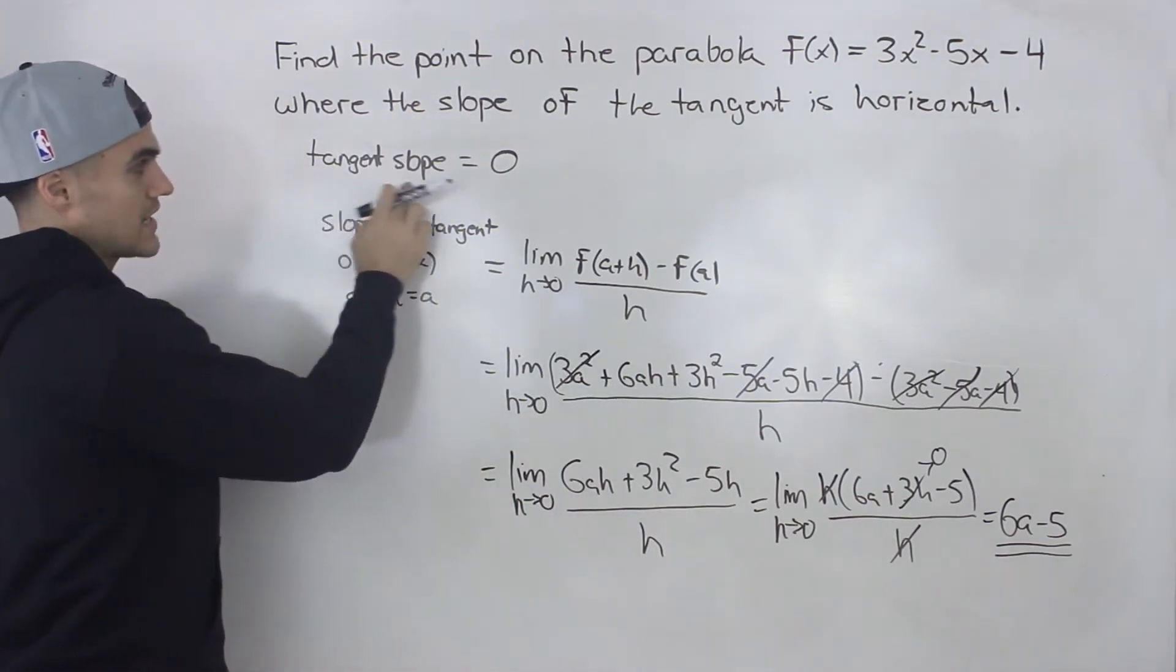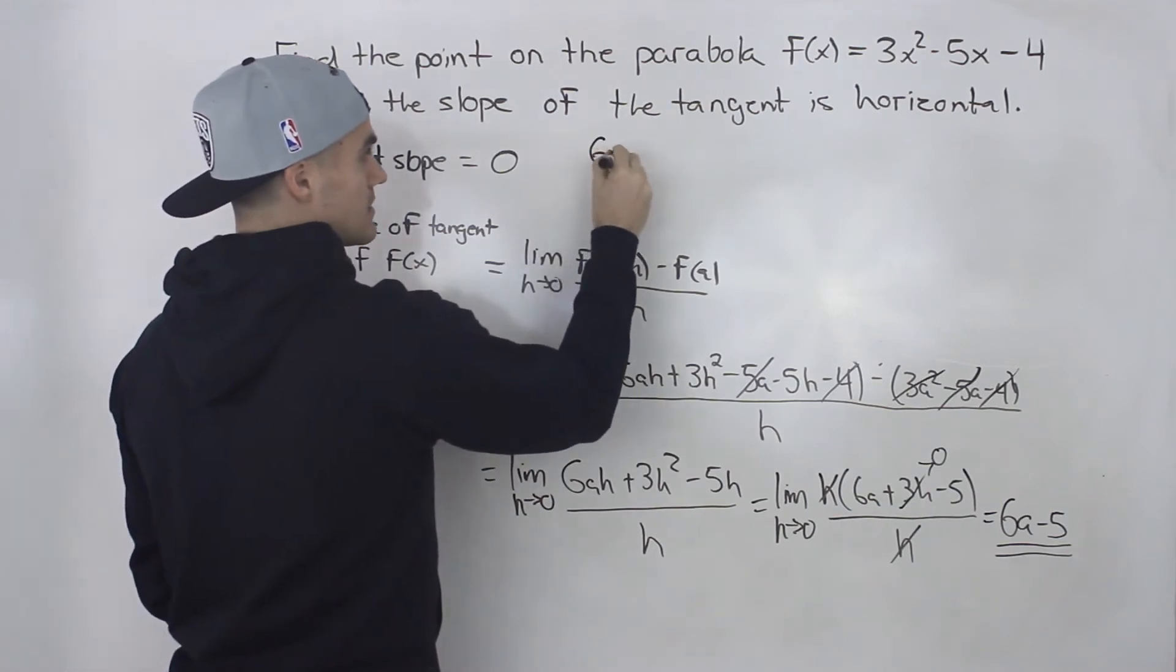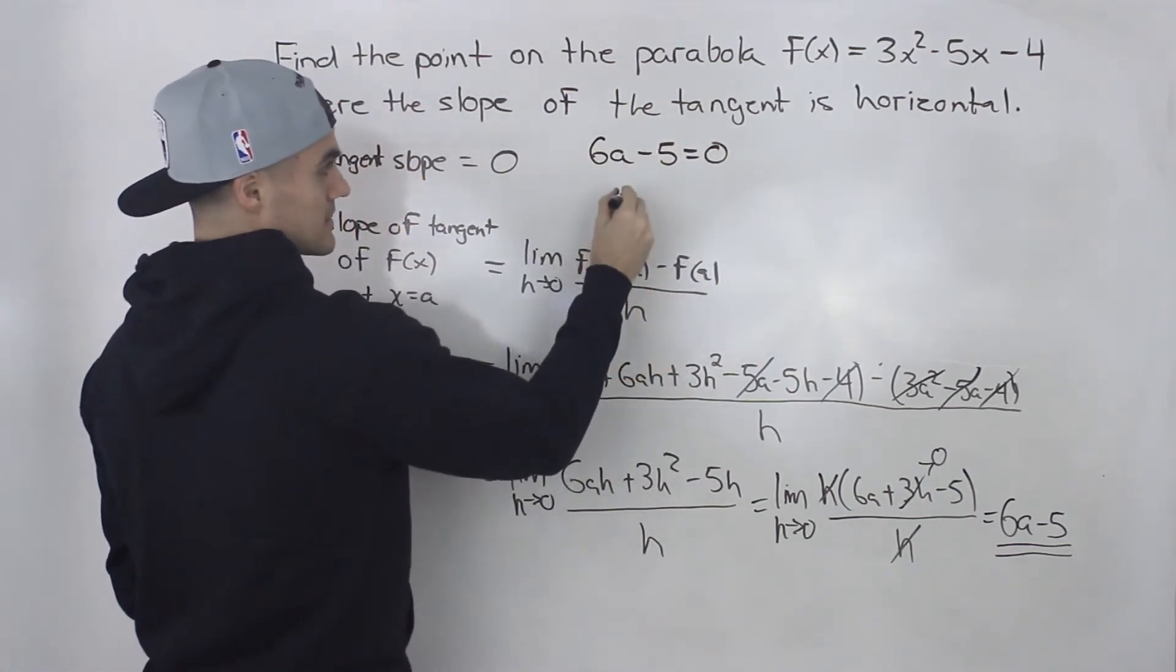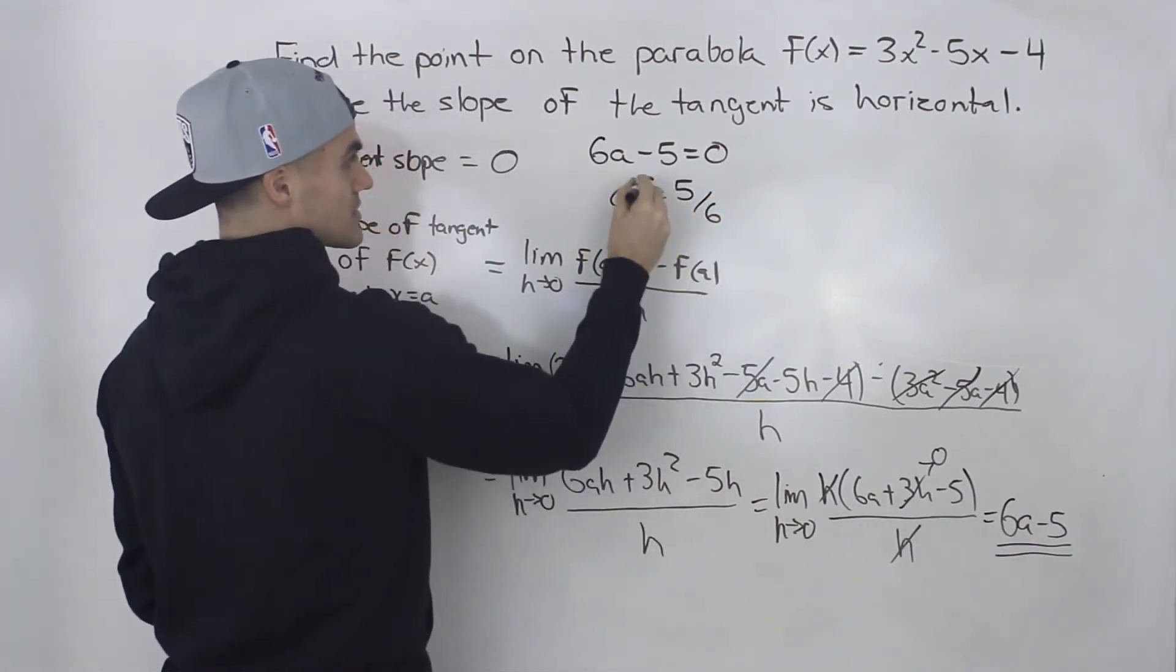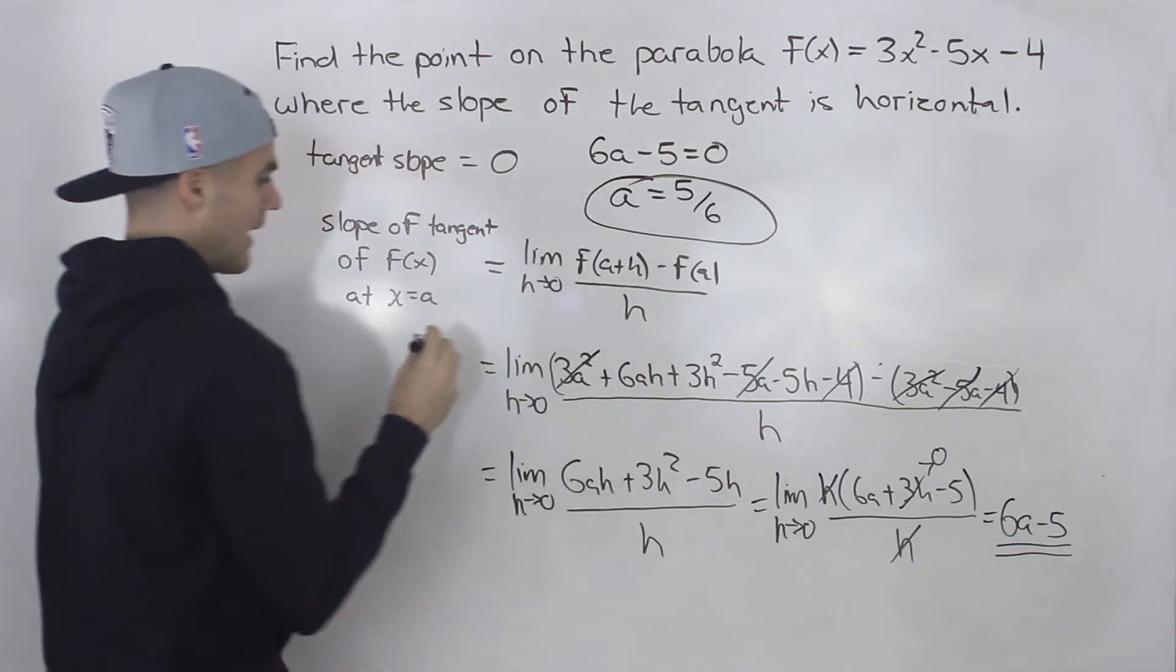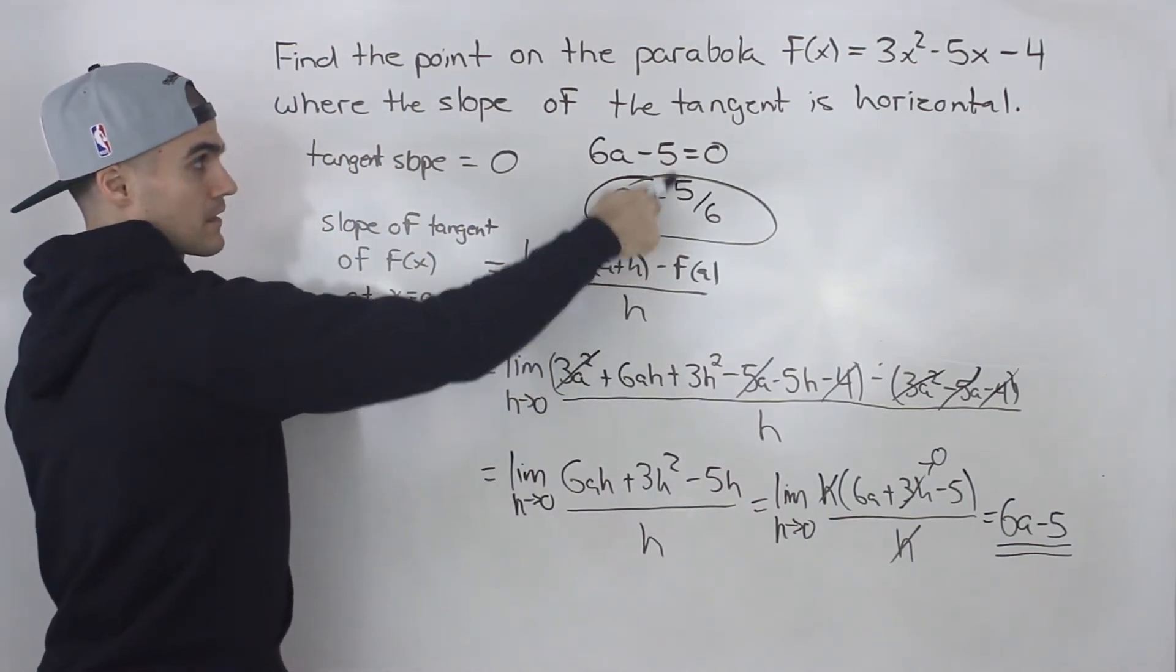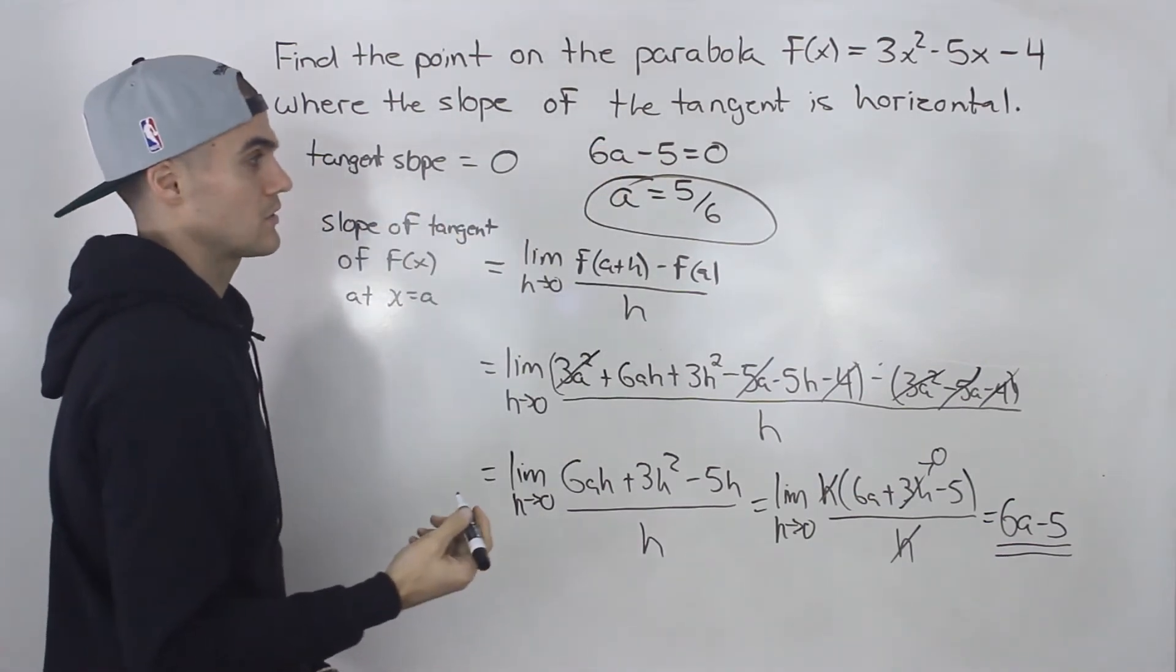So 6a - 5 is the general expression for the slope of the tangent of this function at an x value of a. And we know that the tangent slope has to equal 0. So basically 6a - 5 has to equal 0, and that's going to happen at an a value of 5/6.